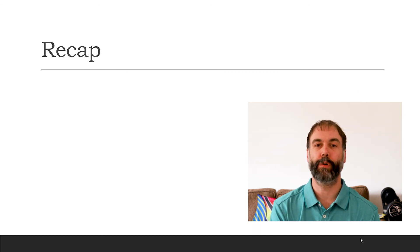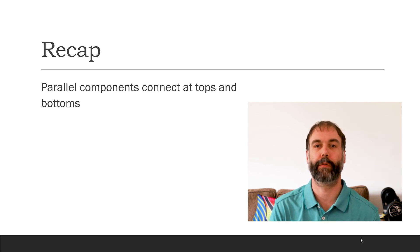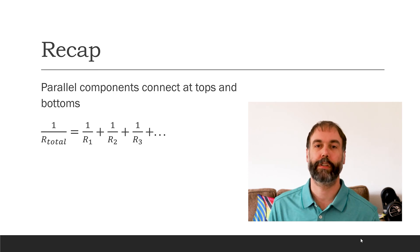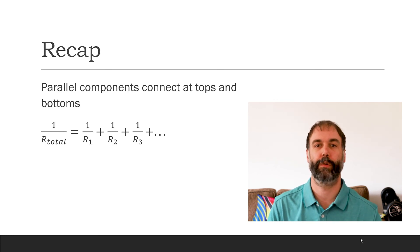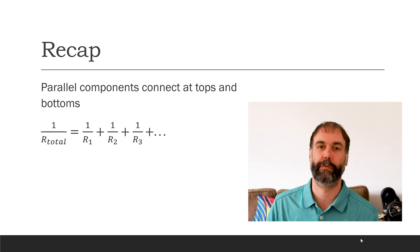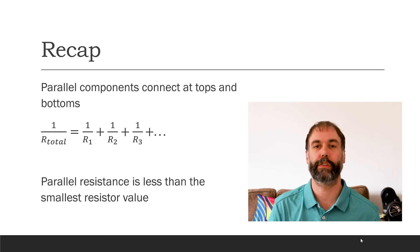So let's do a brief review of what we just learned. The definition of a parallel circuit is that the parallel components connect at their tops and their bottoms. The parallel resistance formula is one over R-total equals one over R1 plus one over R2 plus one over R3, and so on. And finally, the total resistance for any parallel circuit is less than the smallest resistance in that circuit. I hope you enjoyed this lesson, and I look forward to seeing you again next time.